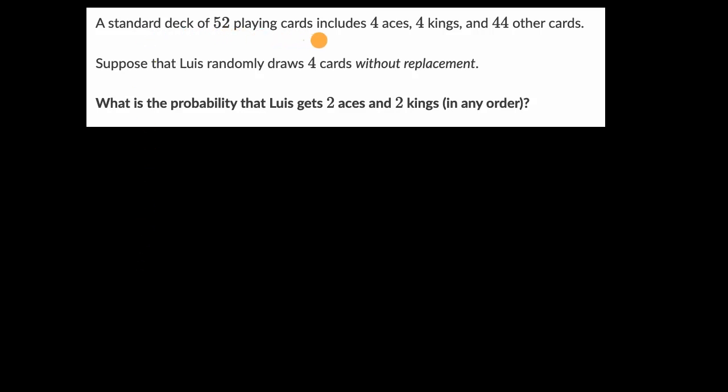We're told that a standard deck of 52 playing cards includes four aces, four kings, and 44 other cards. Suppose that Luis randomly draws four cards without replacement. What is the probability that Luis gets two aces and two kings in any order?